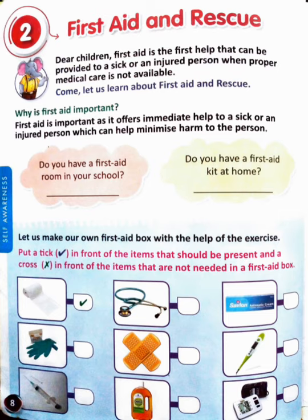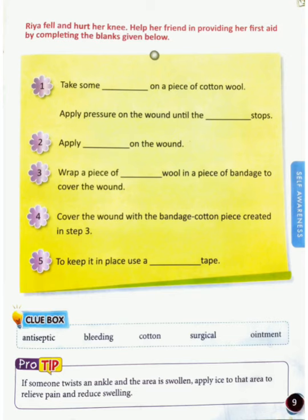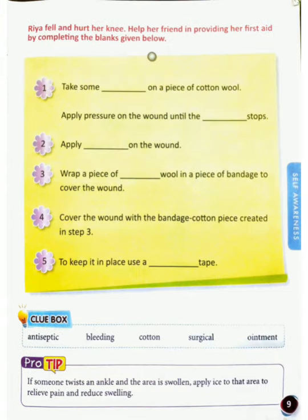Next, here is a scenario for how you would treat an injured person. First, take some ointment on a piece of cotton wool and apply pressure on the wound until the bleeding stops. Then apply antiseptic on the wound, and wrap a piece of cotton wool in a piece of bandage to cover the wound. Cover the wound with the bandage cotton piece and use surgical tape to keep it in place. I hope you have understood this topic very well. Students, take care and have a nice day!